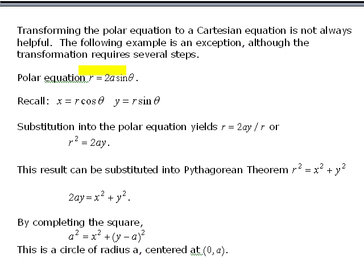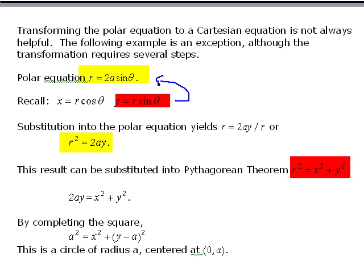We're going to look at this polar equation: r equals 2a, where a is some constant, times the sine of theta. It will take several steps to get to the Cartesian equation. We look at the correspondence between Cartesian xy coordinates and r-theta coordinates. The important one here is y equals r sine theta. We can isolate sine theta and substitute into the polar equation. The result is r squared equals 2a times y. We no longer have a theta, but we still have an r.